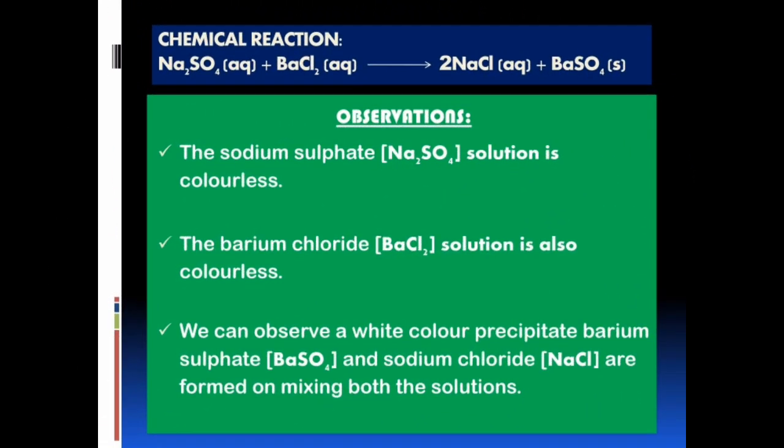The reaction is: sodium sulfate + barium chloride → sodium chloride + barium sulfate. That is: Na₂SO₄ + BaCl₂ → 2NaCl + BaSO₄. Observations: the sodium sulfate solution is colorless, the barium chloride solution is also colorless. We can observe a white color precipitate — barium sulfate and sodium chloride are formed on mixing both the solutions.